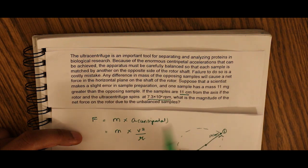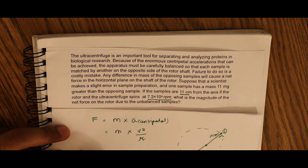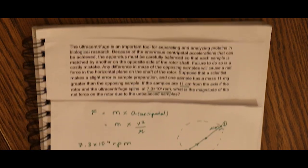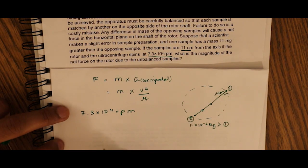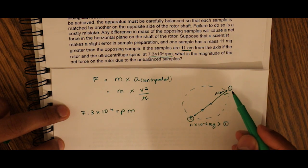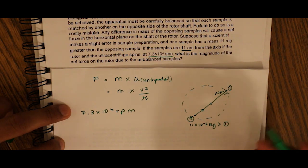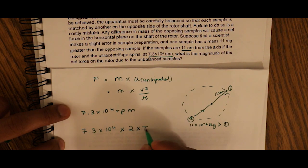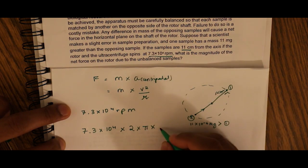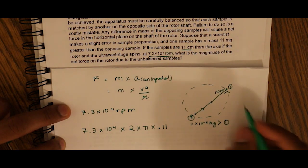The centrifuge spins at 7.3 times 10 to the 4 revolutions per minute. So we have to first convert revolutions per minute into meters per second. We know one revolution is equal to the circumference of a circle, and the circumference of a circle is 2πr. So first we do 7.3 times 10 to the 4, times 2π times r, and our r is 0.11 meters.